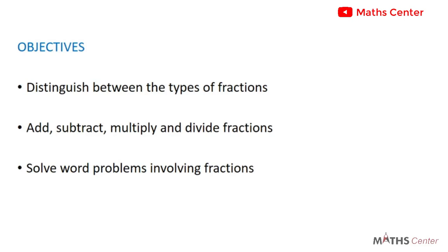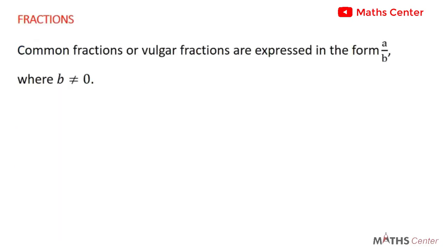So let's learn some basic terms and definitions of fractions. Common fractions or vulgar fractions are expressed in the form A over B, where B is not equal to zero. Now for A over B to be considered as a fraction, B must not be zero because if B becomes zero, we are going to have A over zero, which will give us an undefined expression.